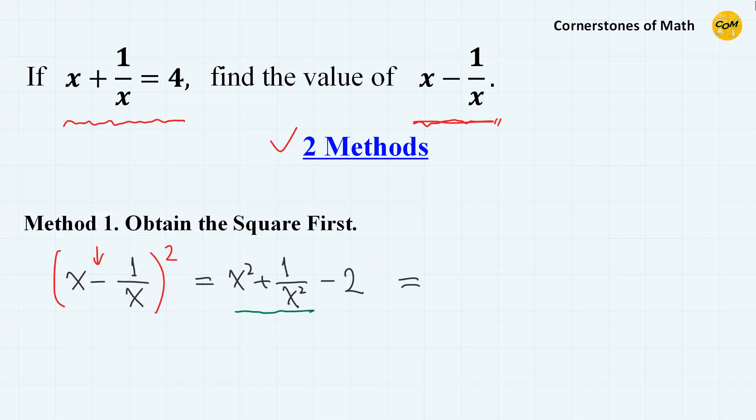And this x squared plus 1 over x squared can be written as x plus 1 over x squared minus 2. So we have x plus 1 over x squared minus 4.